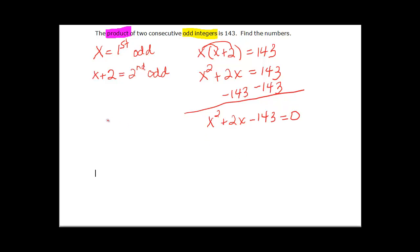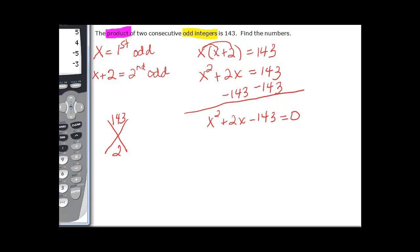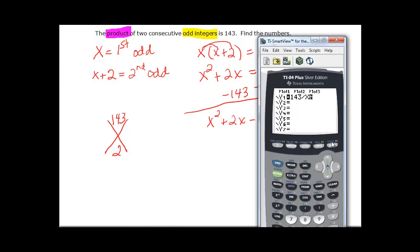So if I want to factor it I'm looking for factors of 143 that will add up to 2. So I could come in here and use my calculator and when I look at my table I'm looking for a difference of 2 and it looks like we're at 11 and 13.